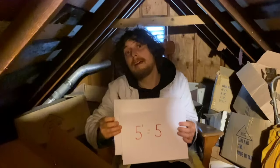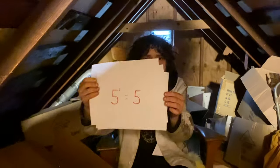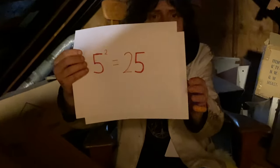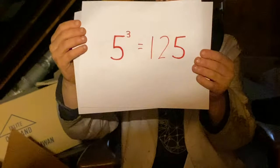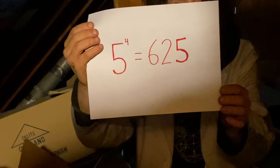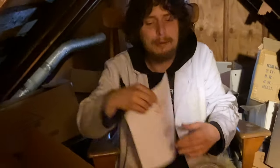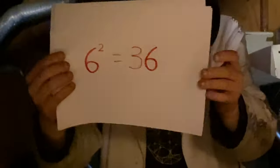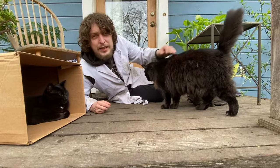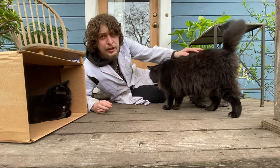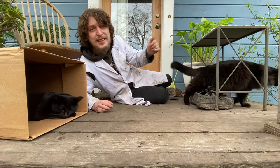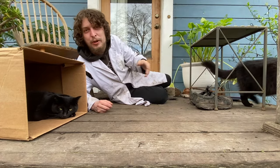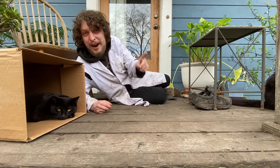Have you noticed that powers of 5 always end in the digit 5? A similar thing happens if we looked at powers of 6. Why don't we take a peek at a chart of what all of the numbers do in our base 10 system when we raise them to different powers?